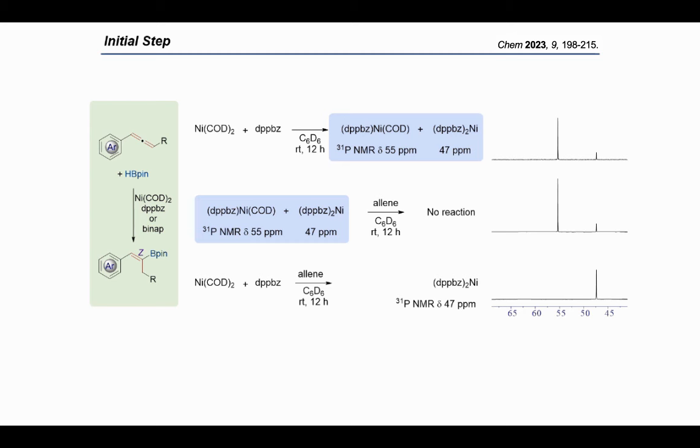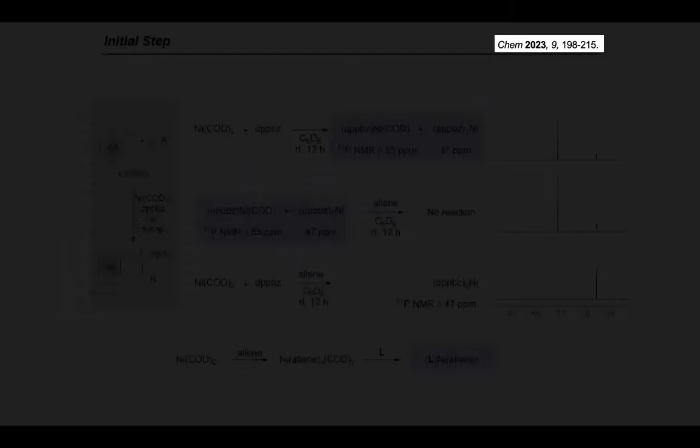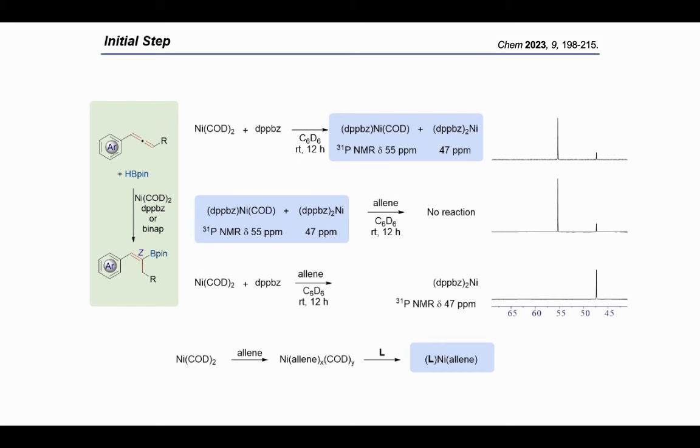The stoichiometric reaction of DPPBZ gives us some clues. The stoichiometric reaction of nickel-COD and DPPBZ will give a mixture of DPPBZ, nickel-COD, and DPPBZ to nickel, and both of them cannot react with allenes. However, in the presence of allenes, the reaction of nickel-COD and DPPBZ can only give DPPBZ to nickel as a single product, which indicates that the initial step should occur between the nickel-COD and allenes to generate nickel-allene complex, which then reacts with the bisphosphine ligand to generate ligand-coordinated nickel-allene complex.